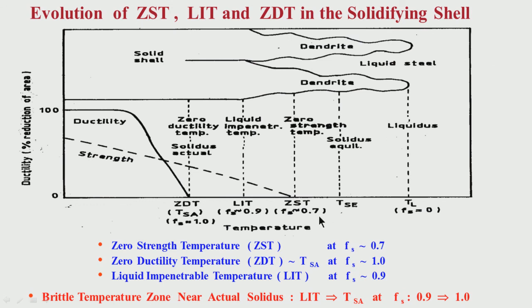Strength has started at around solid fraction 0.7 and ductility has just started to develop at the temperature corresponding to solid fraction 1. So in the region corresponding to solid fraction 0.7 to 1, the strand has strength but it does not have ductility. The implication is this area is very brittle — it is like glass. It has strength but it does not have any ductility. Whenever there will be some strain or stress or force impinging on this solidifying strand or shell, there will be crack formation, because there is no toughness or ductility around this temperature.